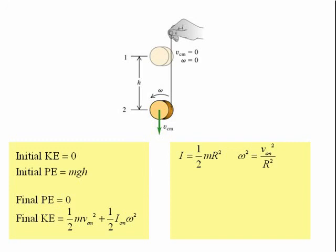Since mechanical energy is conserved, the initial mechanical energy must equal the final mechanical energy. The initial mechanical energy is just mgh.